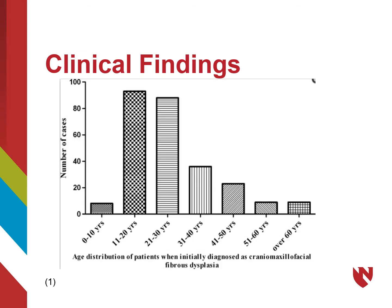It is important to remember that fibrous dysplasia occurs during skeletal development. Here is a graph showing the decades of life that patients were initially diagnosed with fibrous dysplasia. It is most commonly diagnosed in patients in the second and third decades of life. It's interesting to note that some patients were not diagnosed until after their 40s. Because fibrous dysplasia occurs during skeletal development, these likely were asymptomatic cases that had presented for years but were not diagnosed until much later.